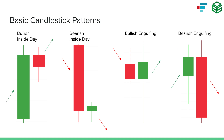Now we can move on to two-candlestick patterns. On the left side you can see a bullish inside day — a two-day pattern where on the first day there's a substantial price increase, and then the following day the range of the second candle is inside the range of the first candle. Day two's high is lower than day one's high, and day two's low is higher than day one's low. This signals continuation but also consolidation — prices are likely to continue to the upside, but today they're just consolidating.